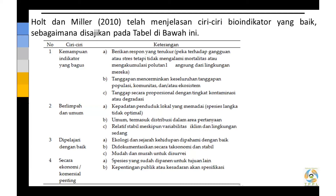Yang kedua adalah berlimpah dan umum. Kepadatan populasi biota tersebut memadai, bukan spesies langka. Kemudian, umum artinya sering dijumpai. Kemudian, relatif stabil meskipun variabilitas iklim dan lingkungan sedang, artinya fluktuasinya tidak terlalu berlebihan.